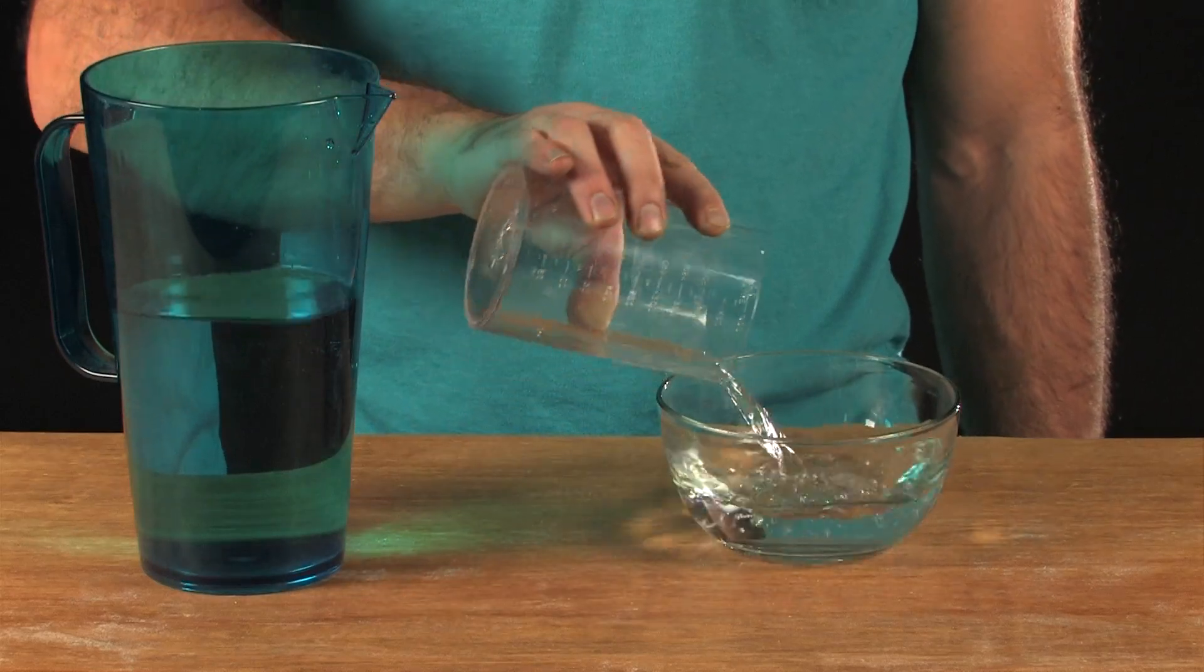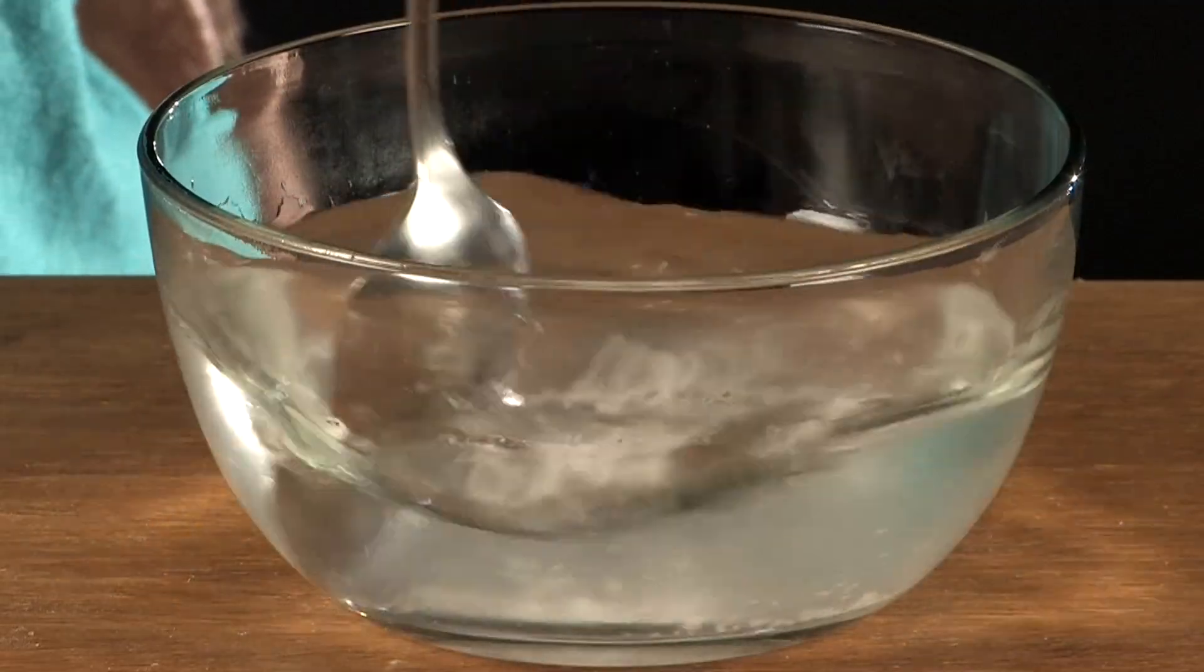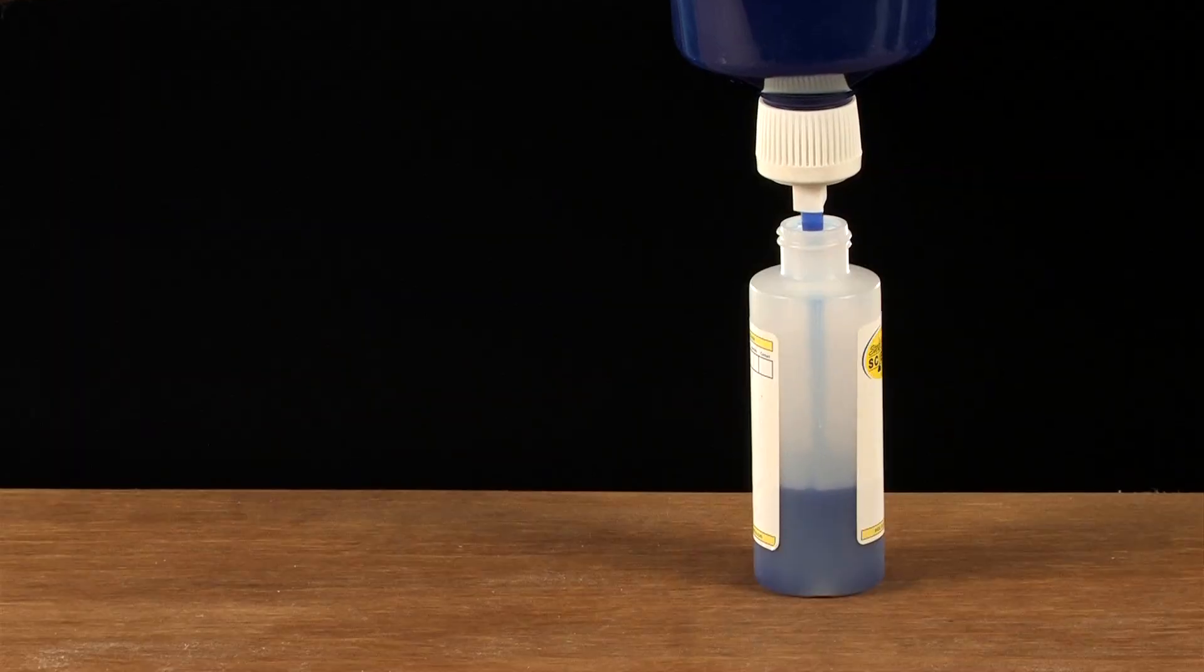Measure out one cup of warm water into the bowl. Next, add one teaspoon of worm activator, making sure all the worm activator is dissolved before moving on.